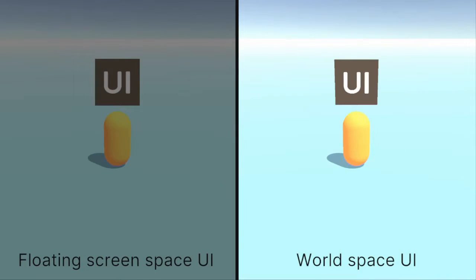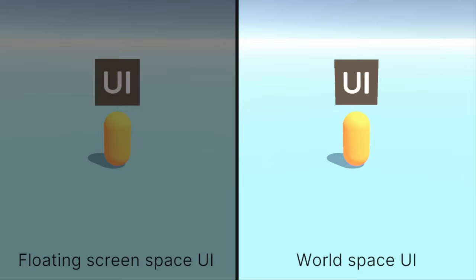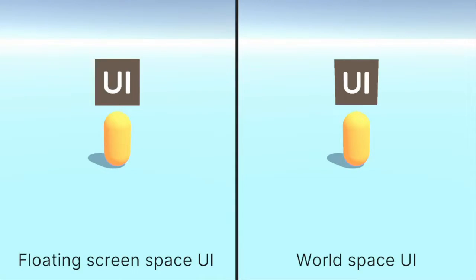On the right, we have WorldSpaceUI, which lives in 3D space. It has a position and orientation. Imagine the sticker is now placed somewhere outside of the window in the 3D world. Making the UI follow the capsule is straightforward — we simply make the UI a child of the capsule in the hierarchy and add a little bit of offset that points towards the sky to move the UI up. This main difference has a bunch of consequences that we will explore now.